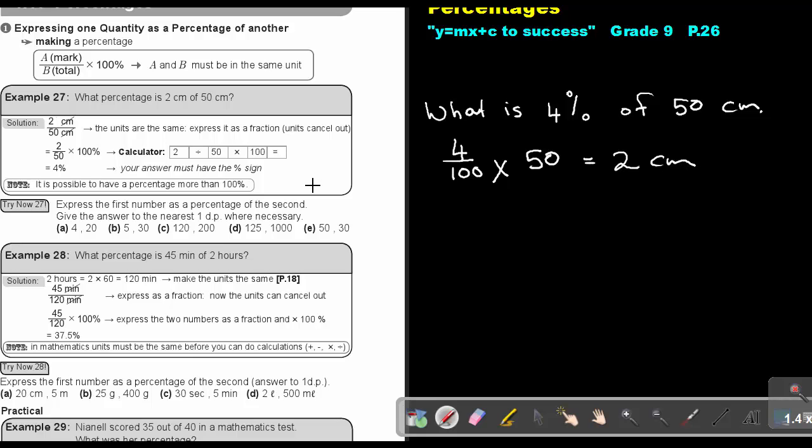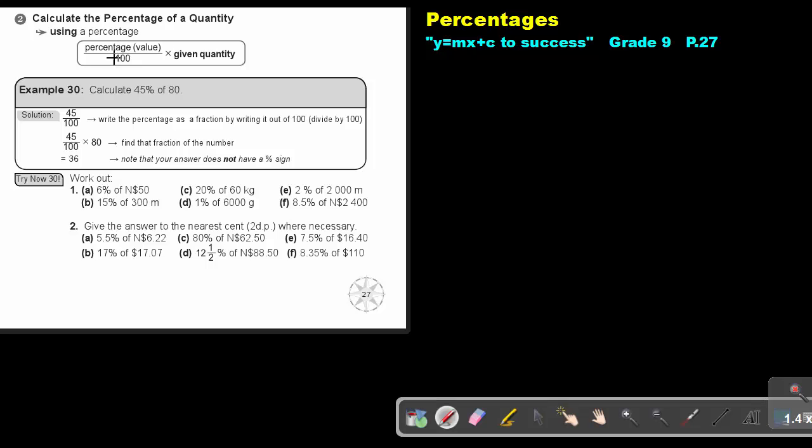What we are going to do is just the reverse of expressing one quantity as a percentage of another. We are taking the percentage, instead of multiplying with 100, we divide with 100 and multiply with the given quantity. So if I say calculate 45% of 80, it's just 45 out of 100 times 80, and that will give you an answer of 36. Note that your answer does not have a percentage sign. Whatever that unit will be, this will be exactly that unit.